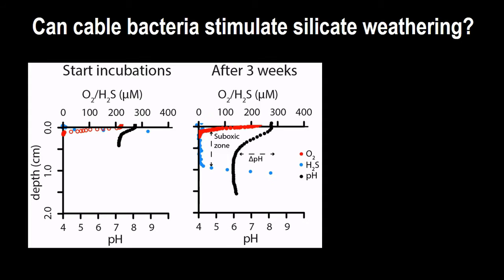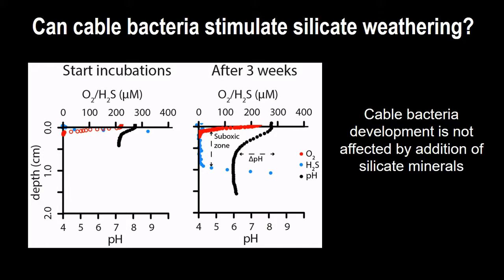After a few weeks, we can see that the cable bacteria are developing and they grow their typical geochemical profile, which is the separation between the blue (the sulfide) and the red (the oxygen). Also, the pH has decreased to values lower than six. So a relatively acidic environment for a marine sediment. This shows that the presence of silicate minerals will not affect the development of the cable bacteria.